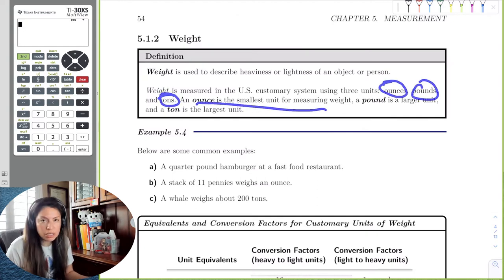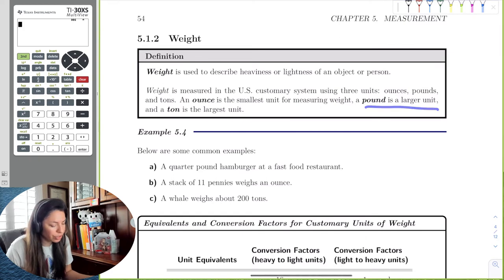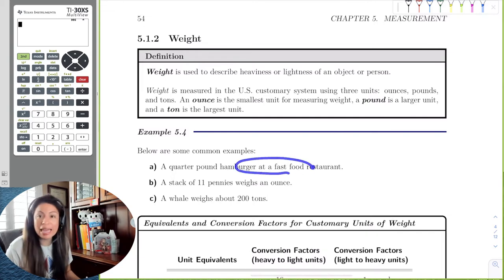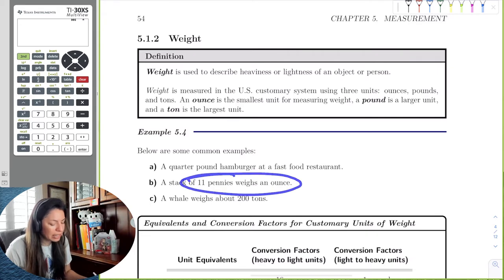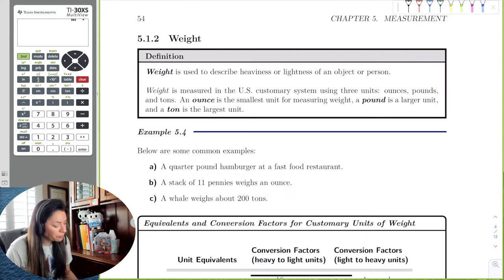The ounce is the smallest unit, and a pound is the larger unit, and a ton is the largest unit. So some examples are a quarter pound hamburger at a fast food restaurant, a stack of 11 pennies weighs an ounce, and a whale weighs about 200 tons.